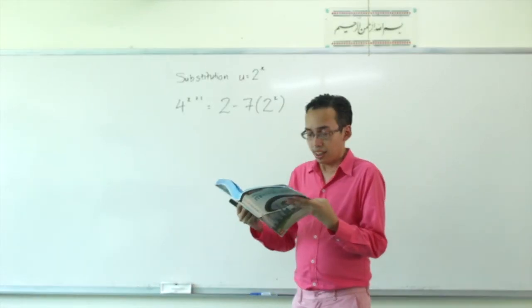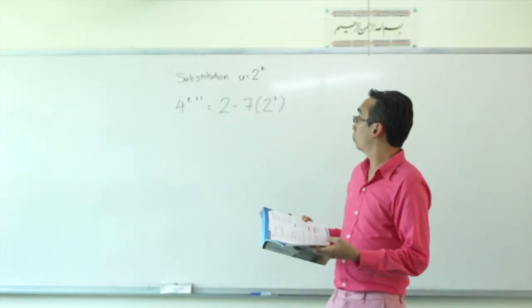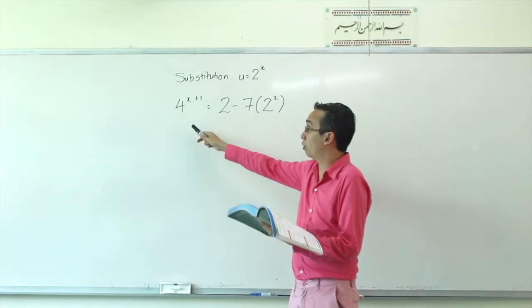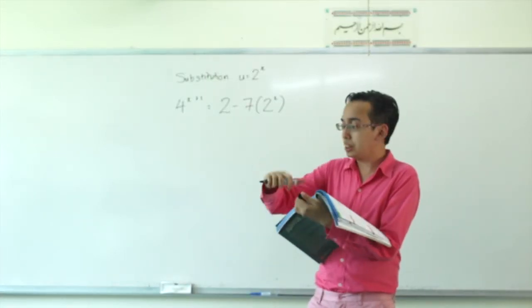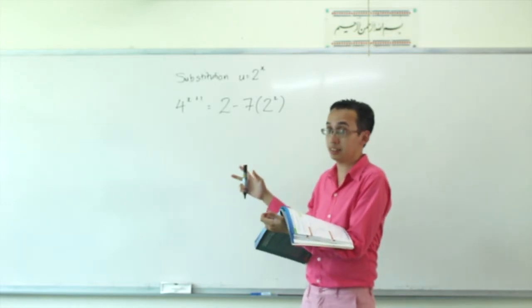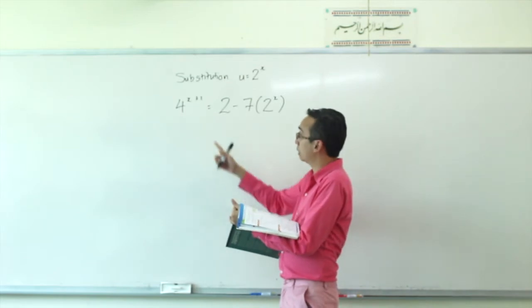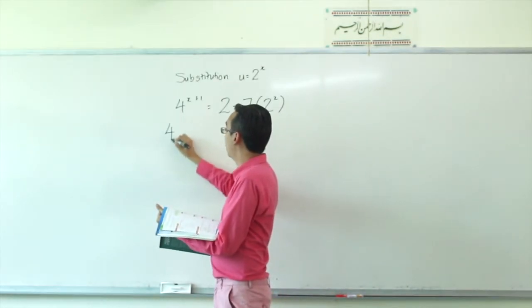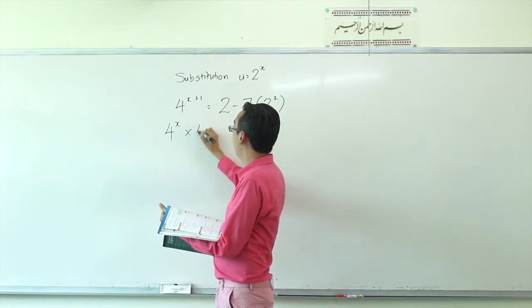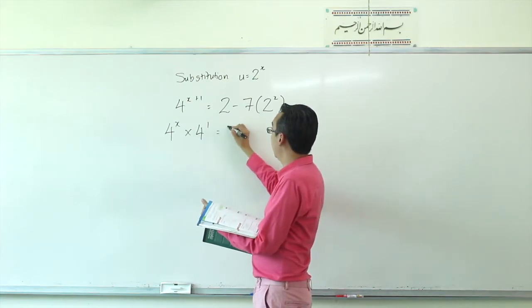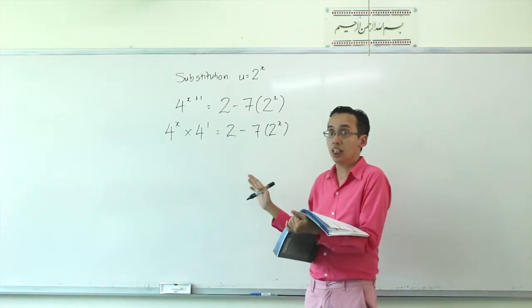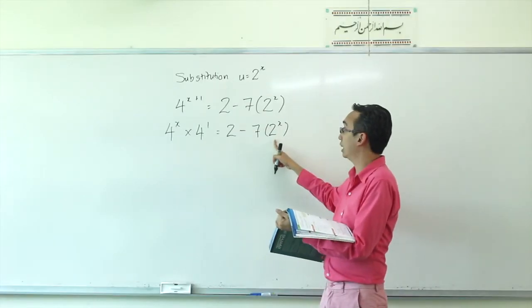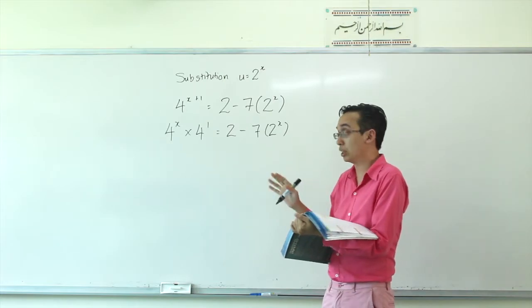They tell us to use the substitution U equals 2 to the power of X to solve this equation: 4 to the power of X plus 1, equals 2 minus 7 multiplied by 2 to the power of X. For 4 to the power of X plus 1, we can split it into 4 to the power of X, multiplied by 4 to the power of 1. You might notice there are 2 to the power of X terms, but don't substitute just yet.